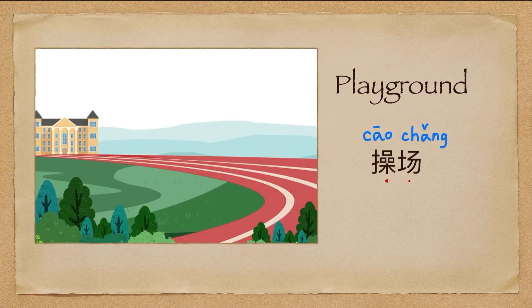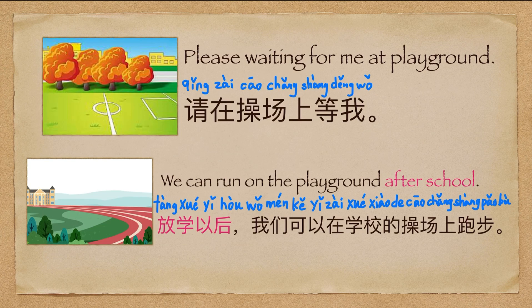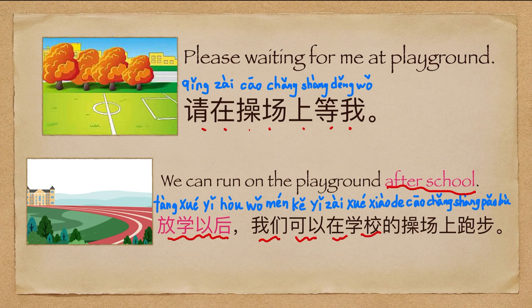操场 (playground/sports field). 请在操场上等我 (Please wait for me on the sports field). 放学以后，我们可以在学校的操场上跑步 (After school, we can run on the school's sports field).